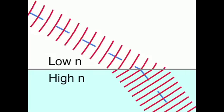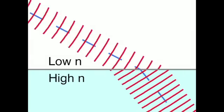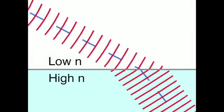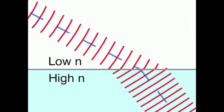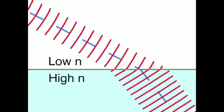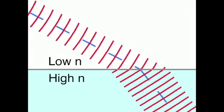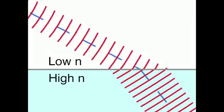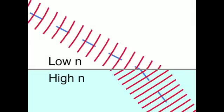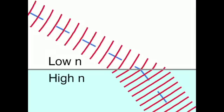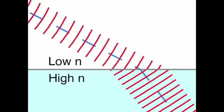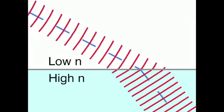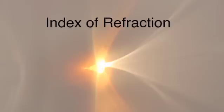Let's take a look at what happens to light rays as they cross the border between two different materials. We'll say for now that the material on top is air, and the material on the bottom is glass. You can see that the light waves traveling in the glass are moving slower than those in the air. The material property that causes this difference is the index of refraction.